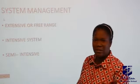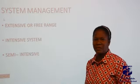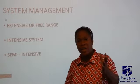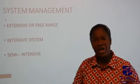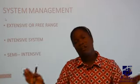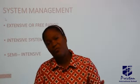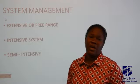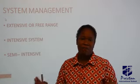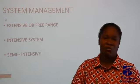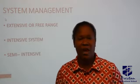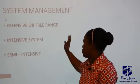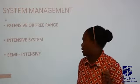Let's look at system management. Number one, we have extensive or free range. Here you allow the animals to fend for themselves. You allow them to move from one place to another, and how they feed, where they live, or anything, it's not your business. So it is called the free range system.